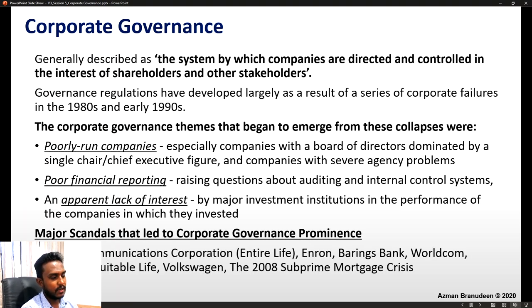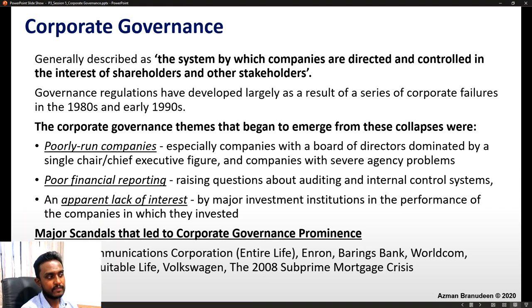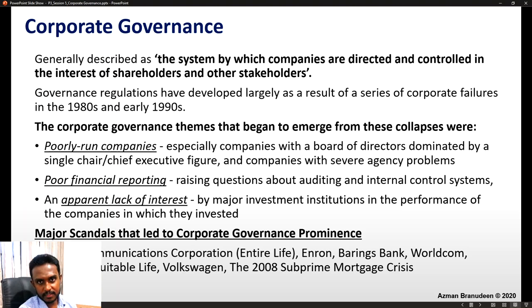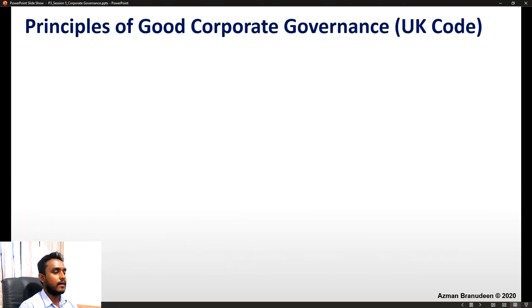Because of these three fundamental themes, so many things went wrong — major scandals that led to corporate governance prominence. Examples include Maxwell Communications Corporation, Enron, Barings Bank, WorldCom, Parmalat, Equitable Life, VW, and even the 2008 subprime mortgage crisis — examples of poor corporate governance not only at an individual or company level, but at a multinational, transnational and macroeconomic level. This explains how important corporate governance really is.